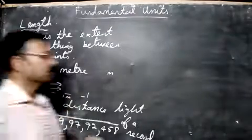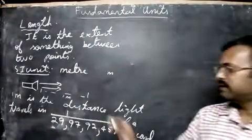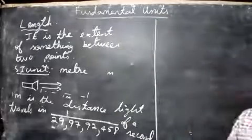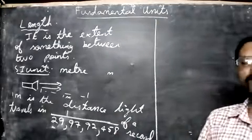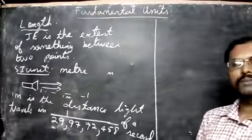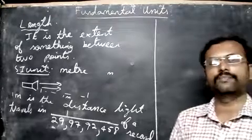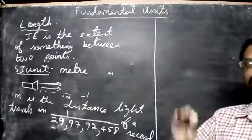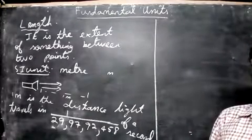So this is the value for one meter. Now we will see what are the bigger units of measurement of length. We have one meter, we have kilometer, but now let's see how to measure distance between two stars.